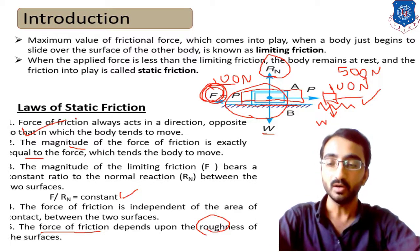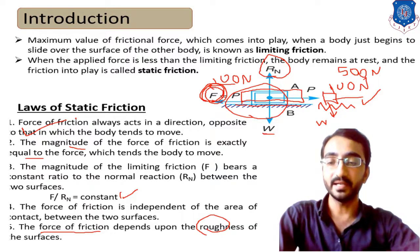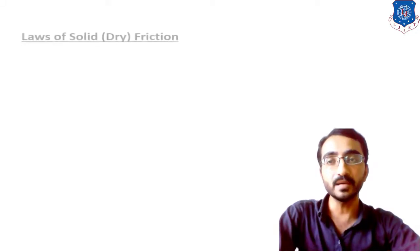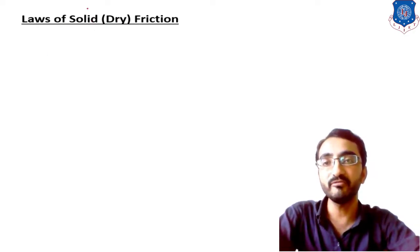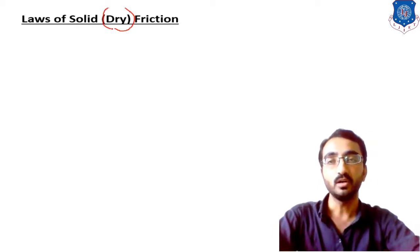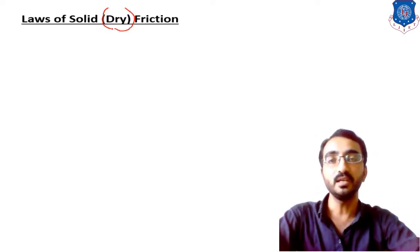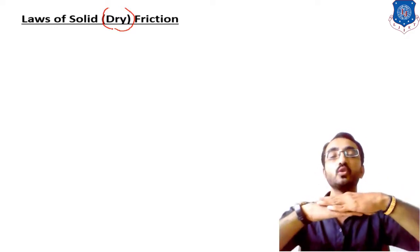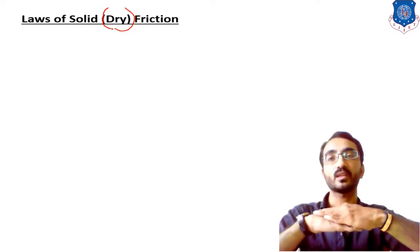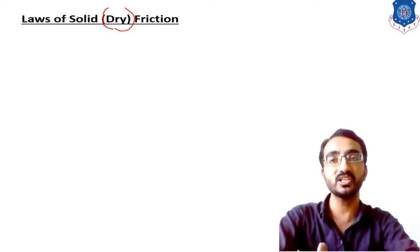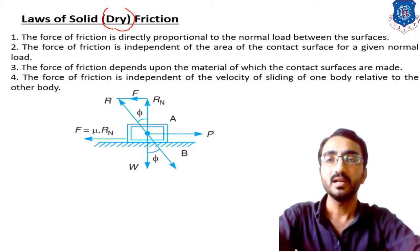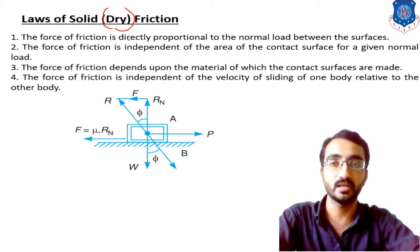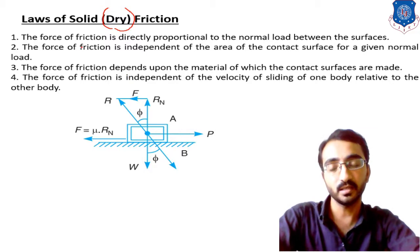This covers the five fundamentals known as the laws of static friction. The next important topic for GTU examinations is the law of solid friction, also called dry friction. Dry friction occurs when two bodies in contact have no lubrication between them. The laws of dry friction are similar to those of static friction but differ in some terms.